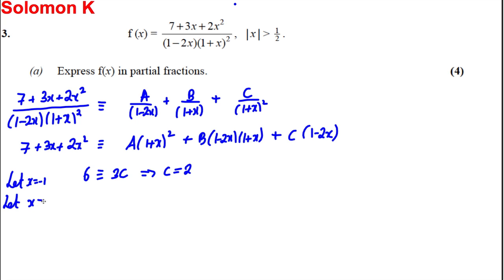Next, let x equal a half because that would mean the B and C terms would disappear. Substituting in a half very carefully, you would get 9 on this side. And that equals (1 plus a half) squared times A, which gives you 9 over 4. So A is therefore 9 divided by 9 over 4, which equals 4.